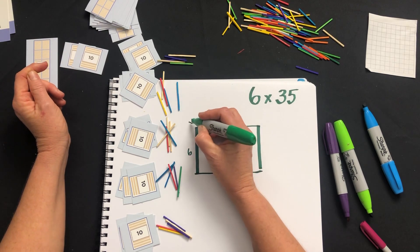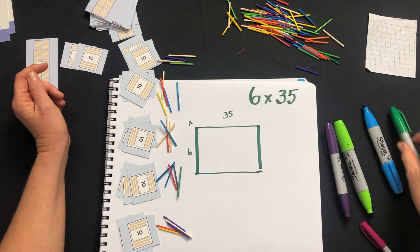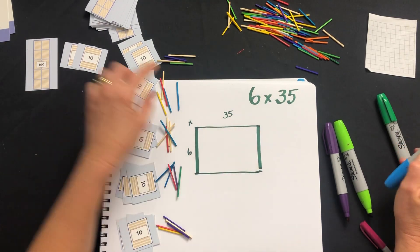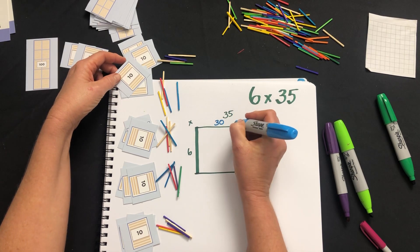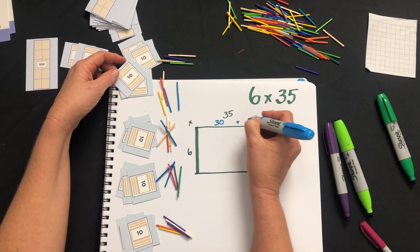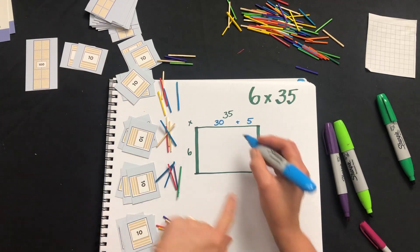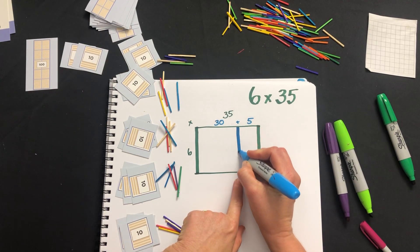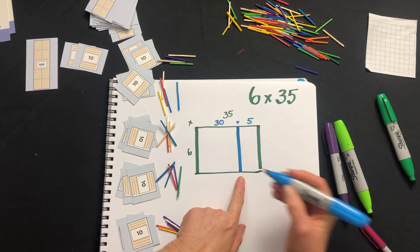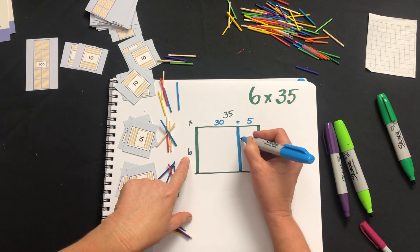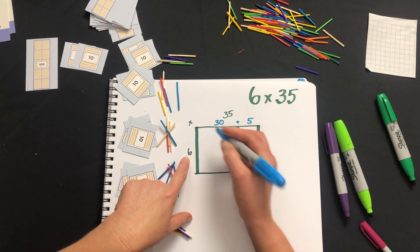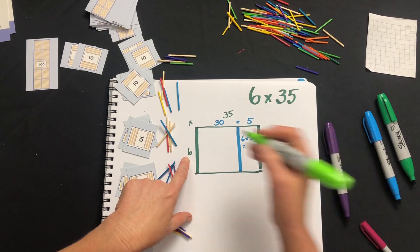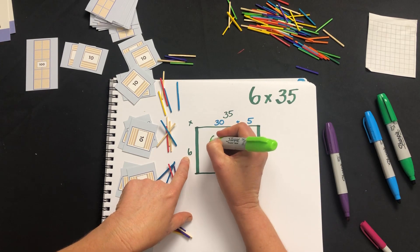So this is 6 multiplied by 35, but we can partition our 35 into three tens - 30 plus 5 - and that creates two rectangles for us. We have a 6 by 5 rectangle, and we have a 6 by 30 rectangle.